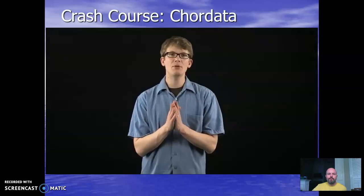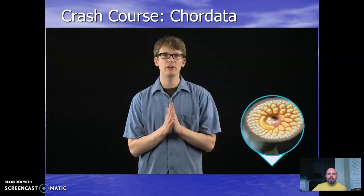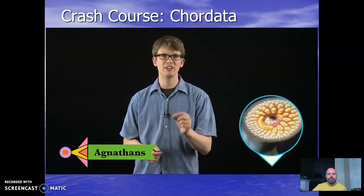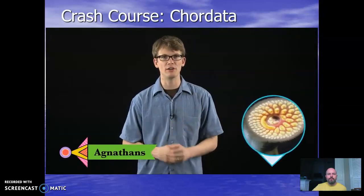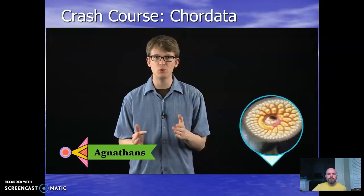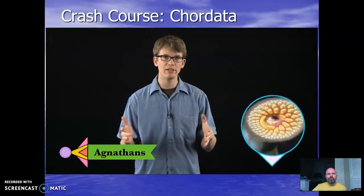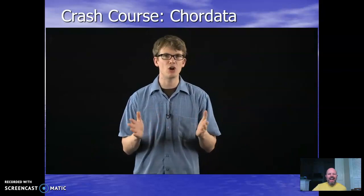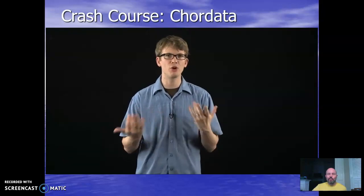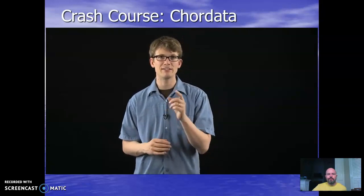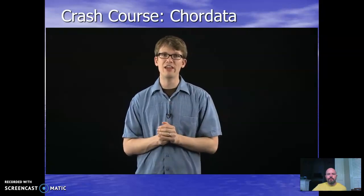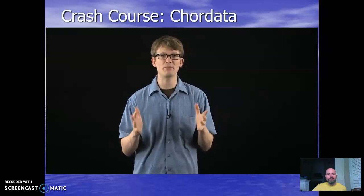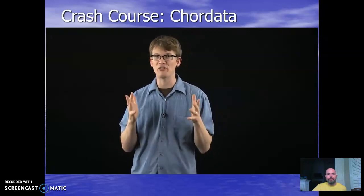But notice something missing: lampreys and other early vertebrates are agnathans — literally 'no jaws.' And if you want to chew food, it really helps to have a jaw and teeth. Most scientists think the jaw evolved from structures that supported the first two pharyngeal slits. The current theory is that teeth evolved from sharp scales on the face.